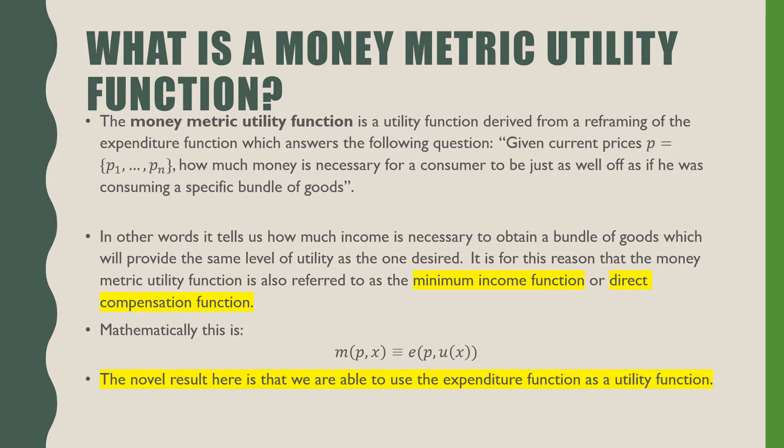In other words, it tells us how much income is necessary to obtain a bundle of goods which will provide the same level of utility as the one desired. It is for this reason that the money metric utility function is also referred to as the minimum income function or direct compensation function.